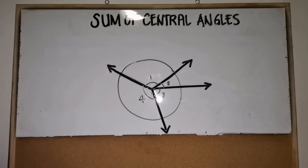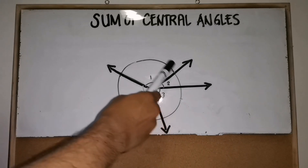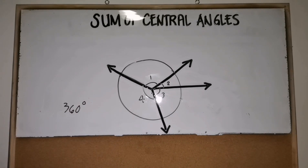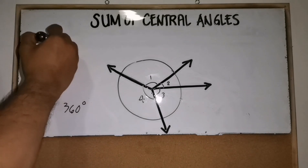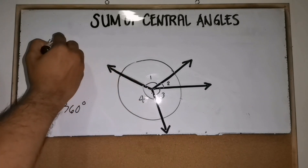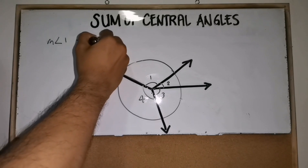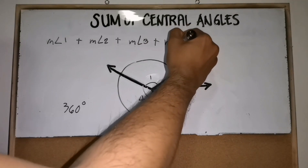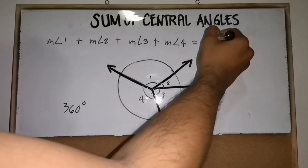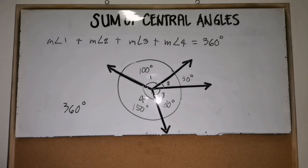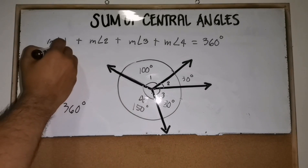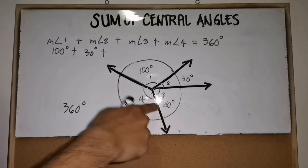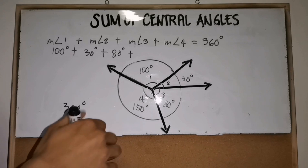Next is the sum of central angles. As we all know, one revolution of a circle measures 360 degrees, so the sum of central angles is also 360 degrees. The measure of angle one plus measure of angle two plus measure of angle three plus measure of angle four is equal to 360 degrees. For example, if angle one is 100°, angle two is 30°, angle three is 80°, and angle four is 150°.